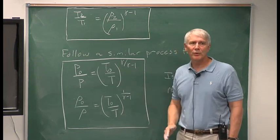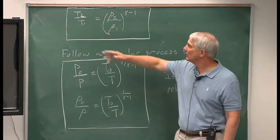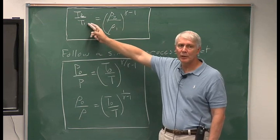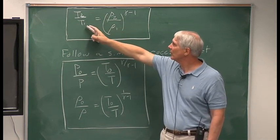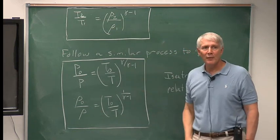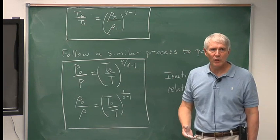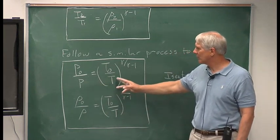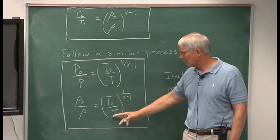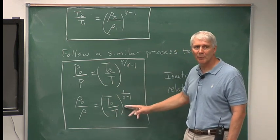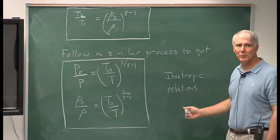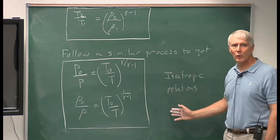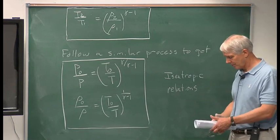Because these are arbitrary points in the flow, we can choose any point we want. We could write T0 over T equals rho0 over rho to the gamma minus 1. Following a similar process using the equation of state, we also get p0 over p equals T0 over T to the gamma over gamma minus 1, and rho0 over rho equals T0 over T to the 1 over gamma minus 1. These three equations I will be referring to as our isentropic relations, and we'll use them quite a bit in solving problems. And that's all I have for this particular lecture.